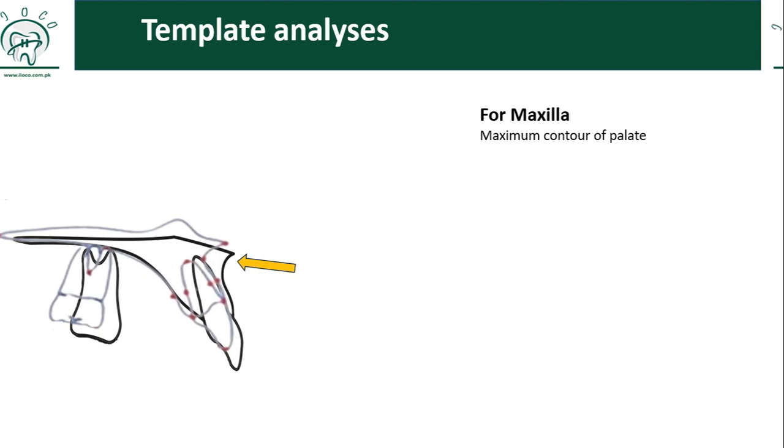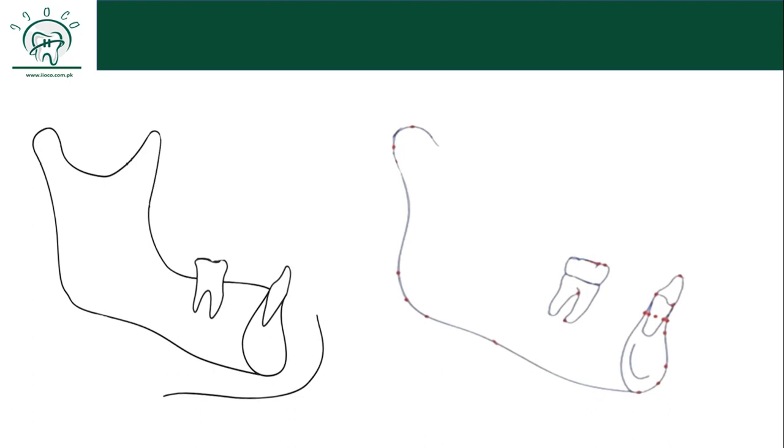Now superimposition of mandible separately. The point of superimposition is lingual cortical plate. And if possible and visible, then you can also use mandibular canal shadow to superimpose both the tracings. Now here you can also appreciate some difference in the length of the mandible and along with that some difference in the dentition as well.